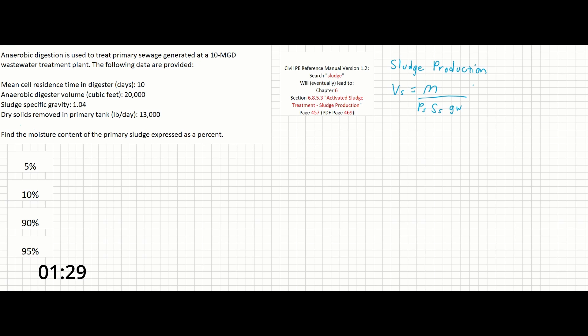In this case, V_S is the sludge volume produced in cubic feet, M is the sludge production rate on a dry weight basis in pounds force, GW is the specific weight of water in pounds force per cubic foot, S_S is the specific gravity of the sludge slurry, and P_S is the percent of solids expressed as a decimal.